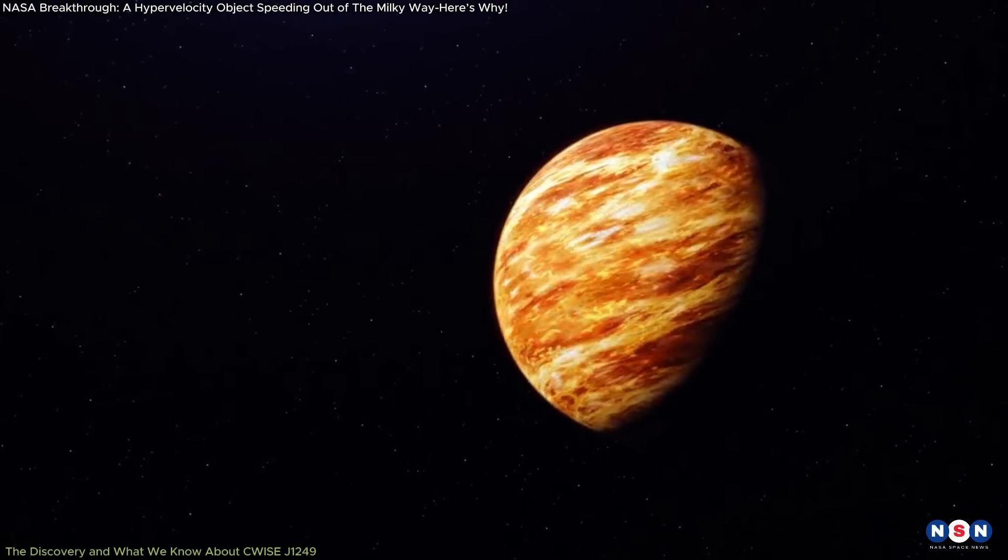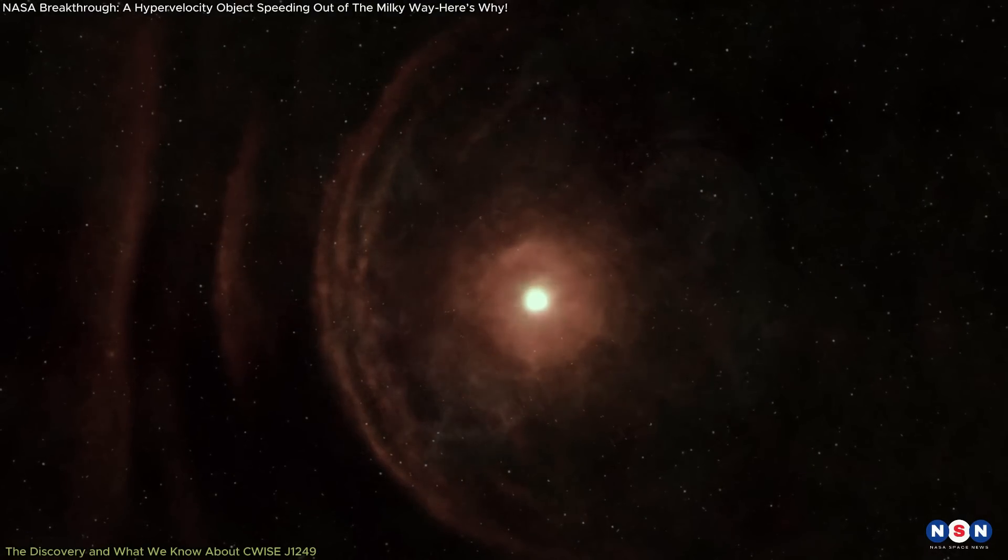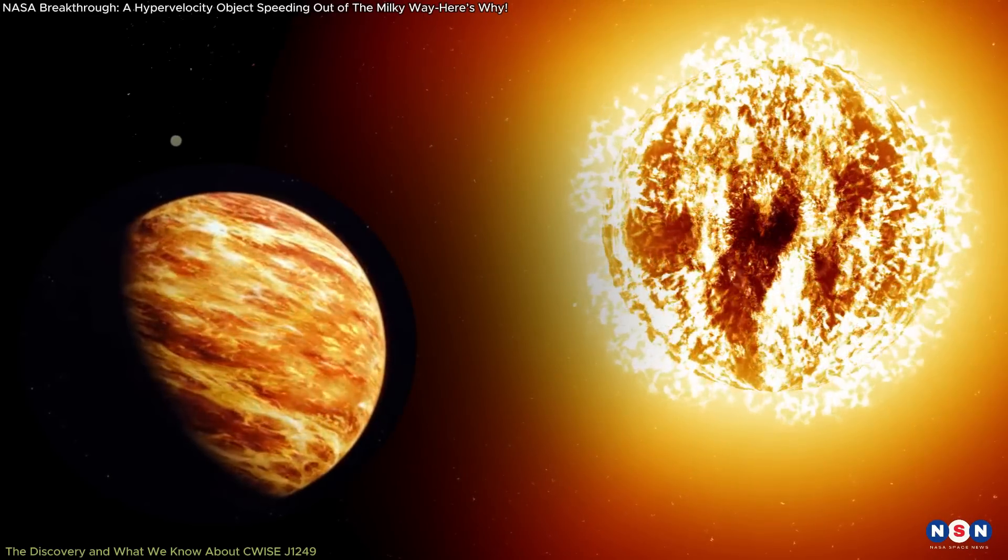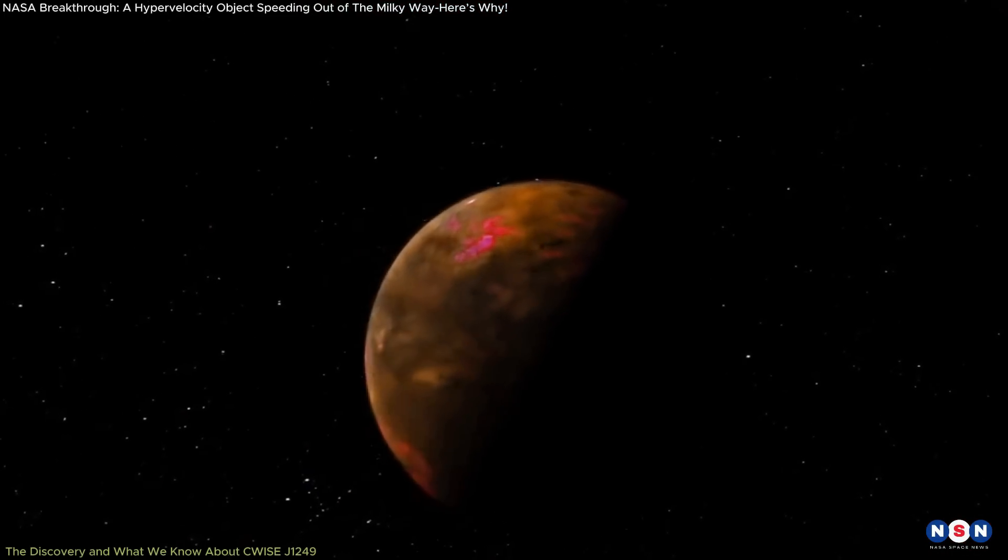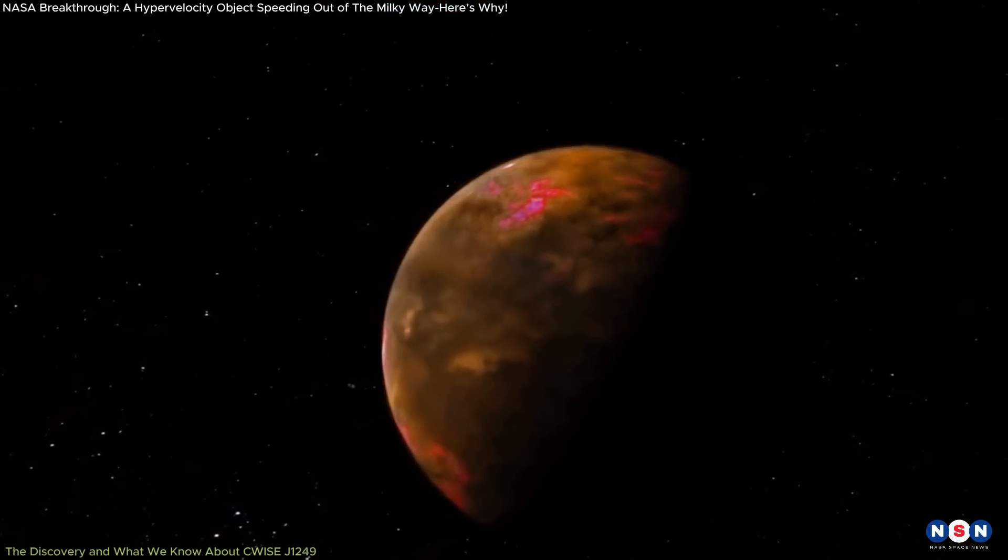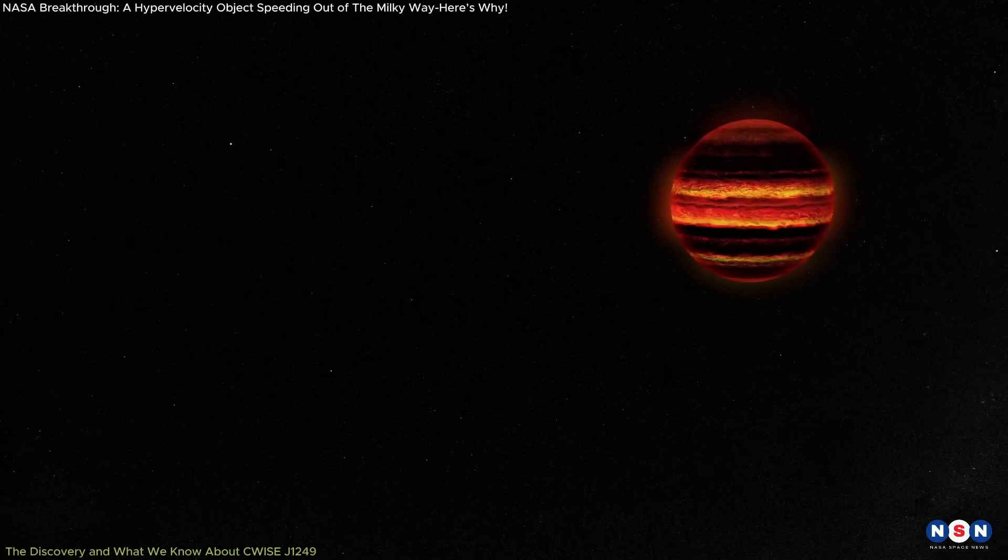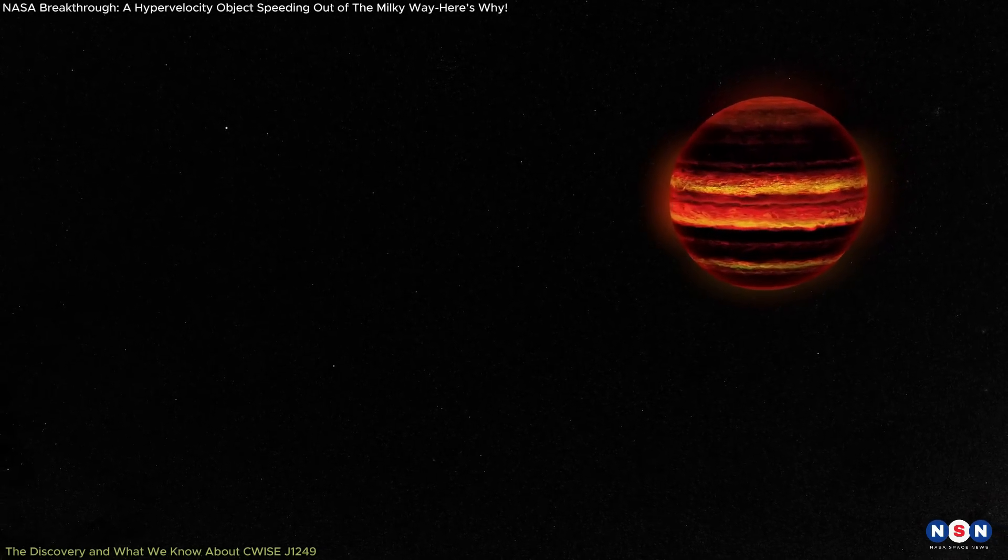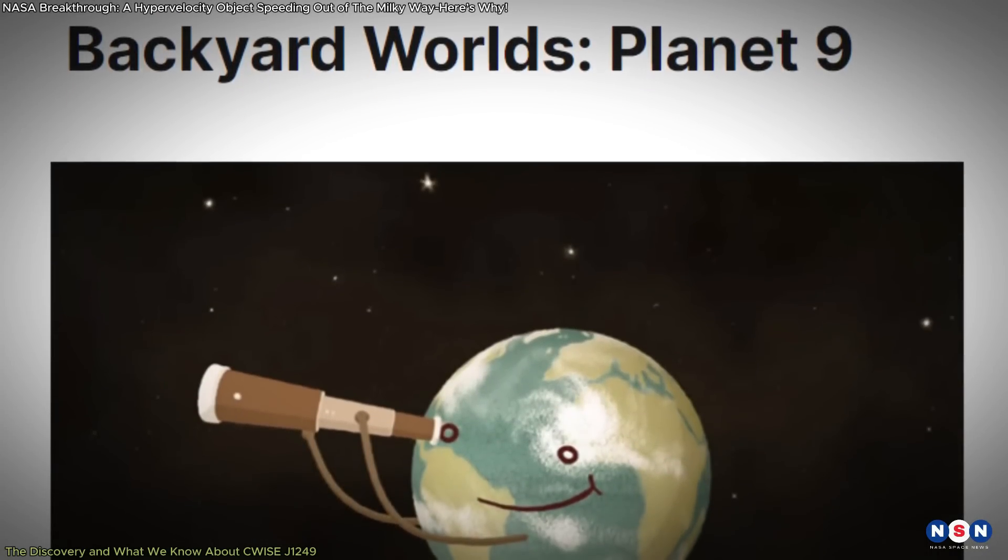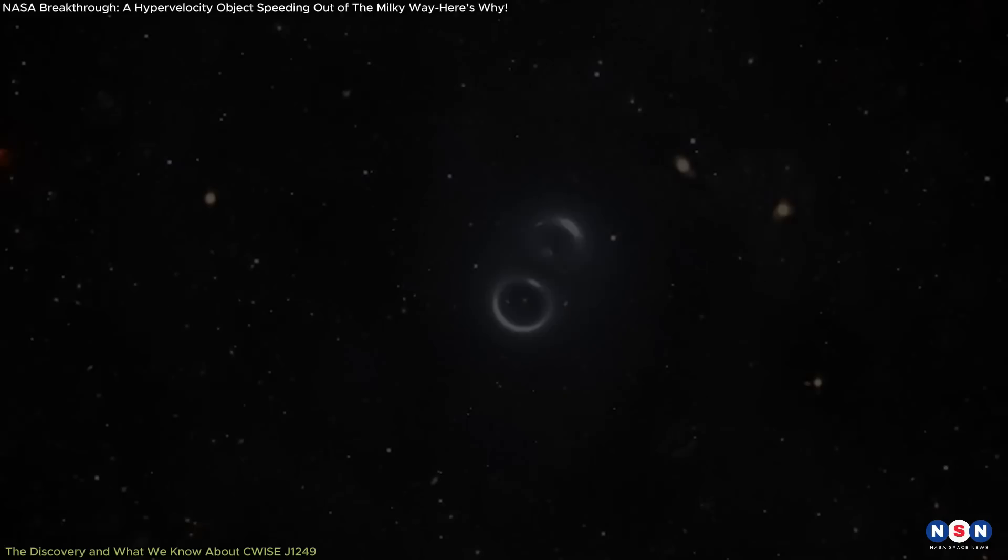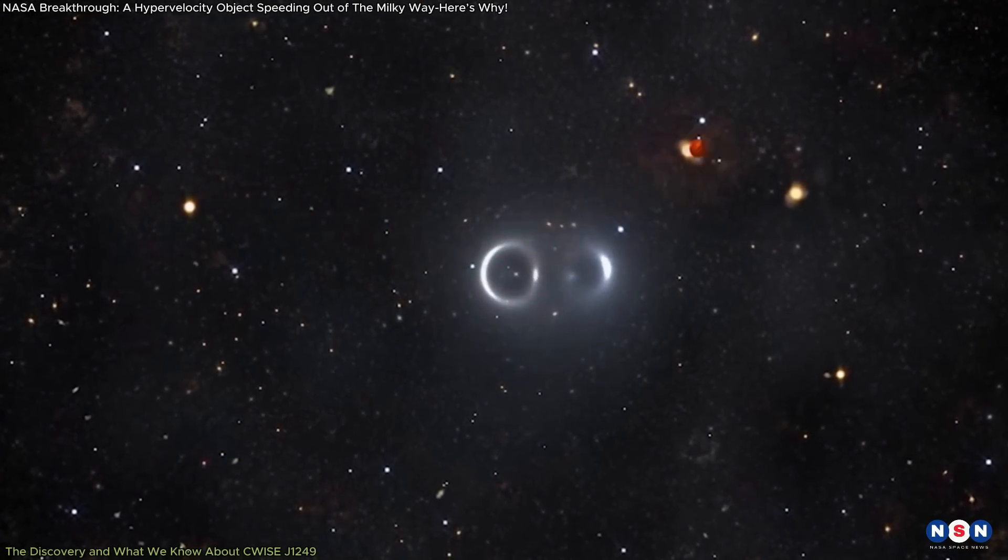It stands out because of its relatively low mass. It is difficult to classify the object definitively, but scientists speculate that it might be either a low mass star or a brown dwarf, a so-called failed star that did not accumulate enough mass to trigger hydrogen fusion in its core. Brown dwarfs, although common, typically do not travel at such extraordinary velocities. In fact, while citizen scientists involved in the Backyard Worlds Planet Nine Project have discovered over 4,000 brown dwarfs, none of them have been observed exiting the Milky Way at such a high speed.